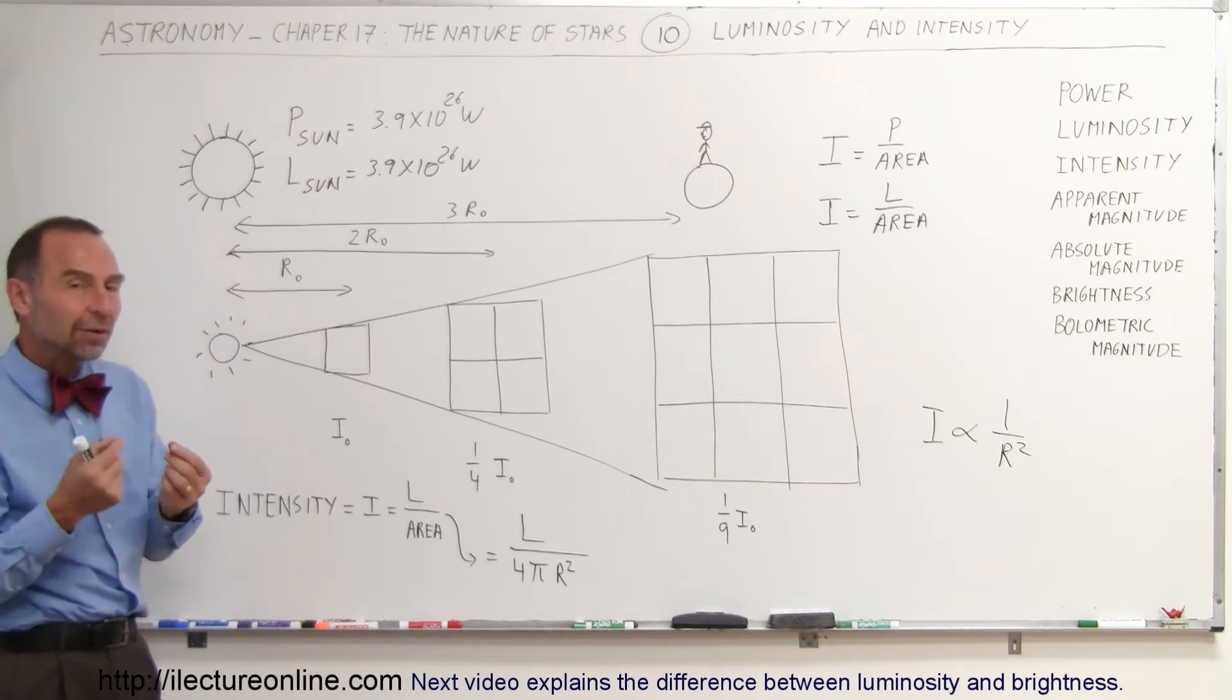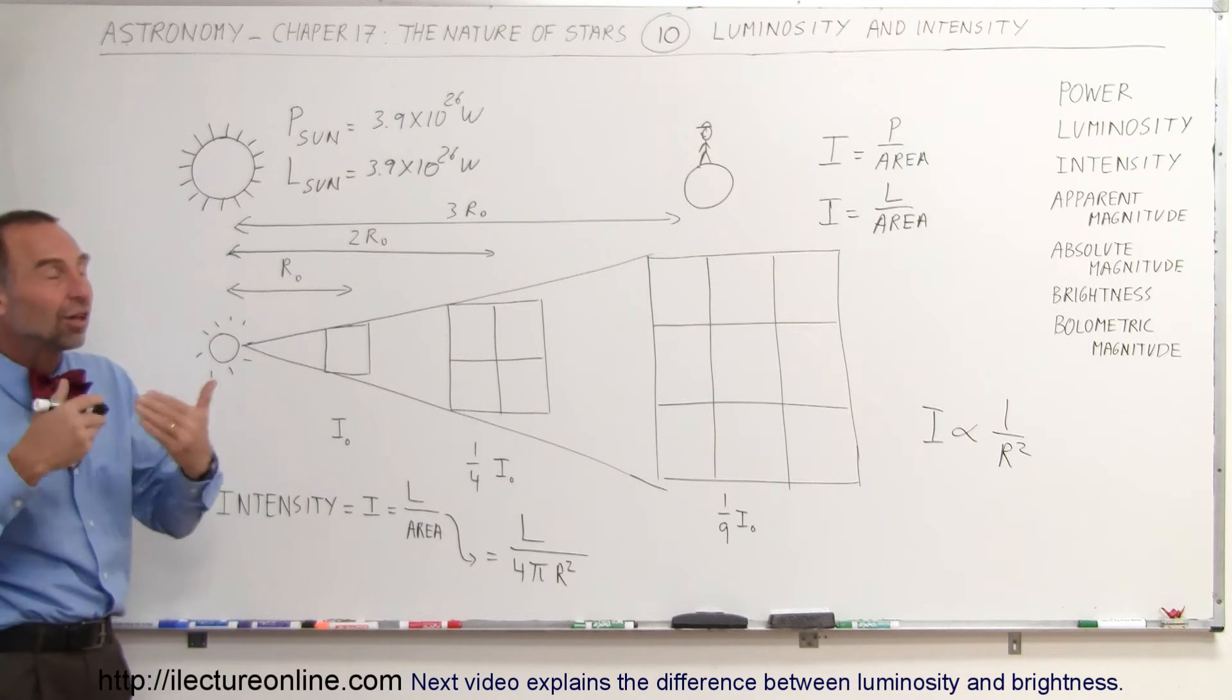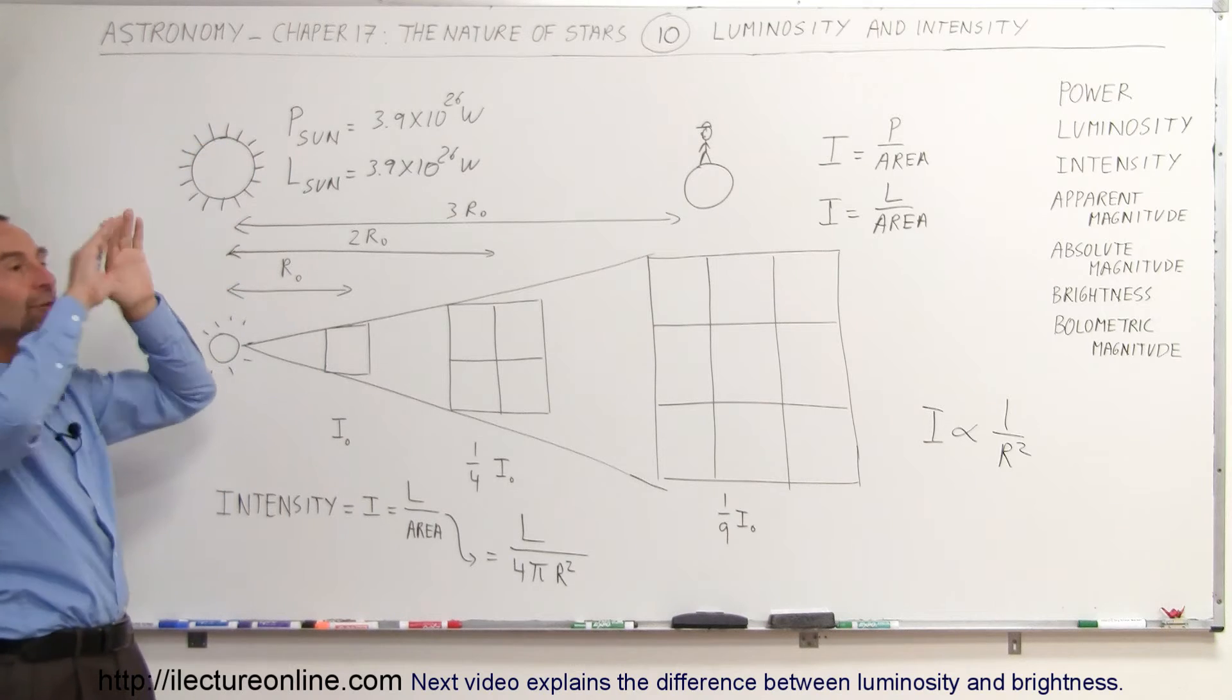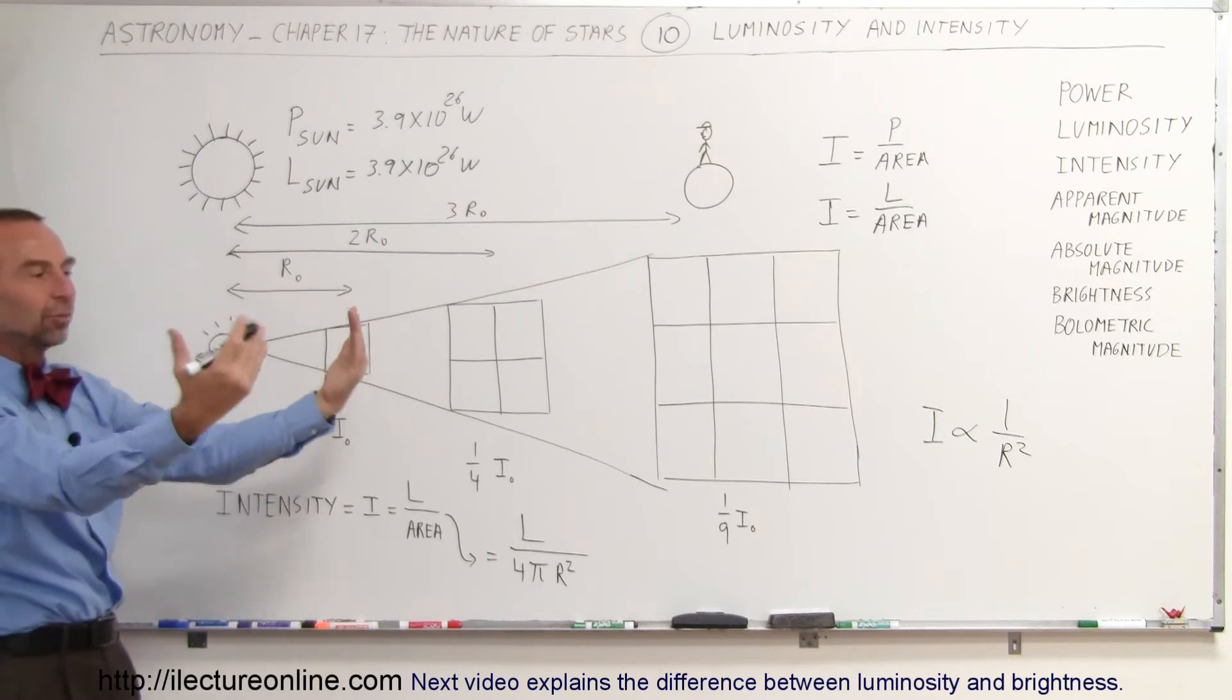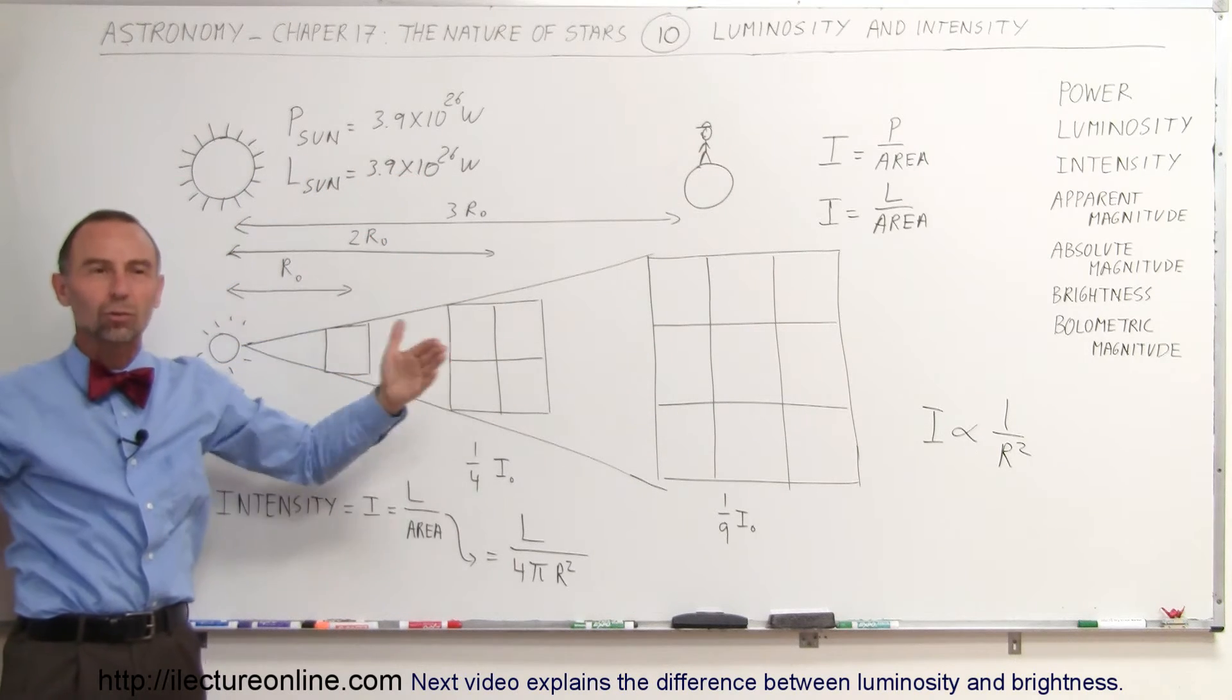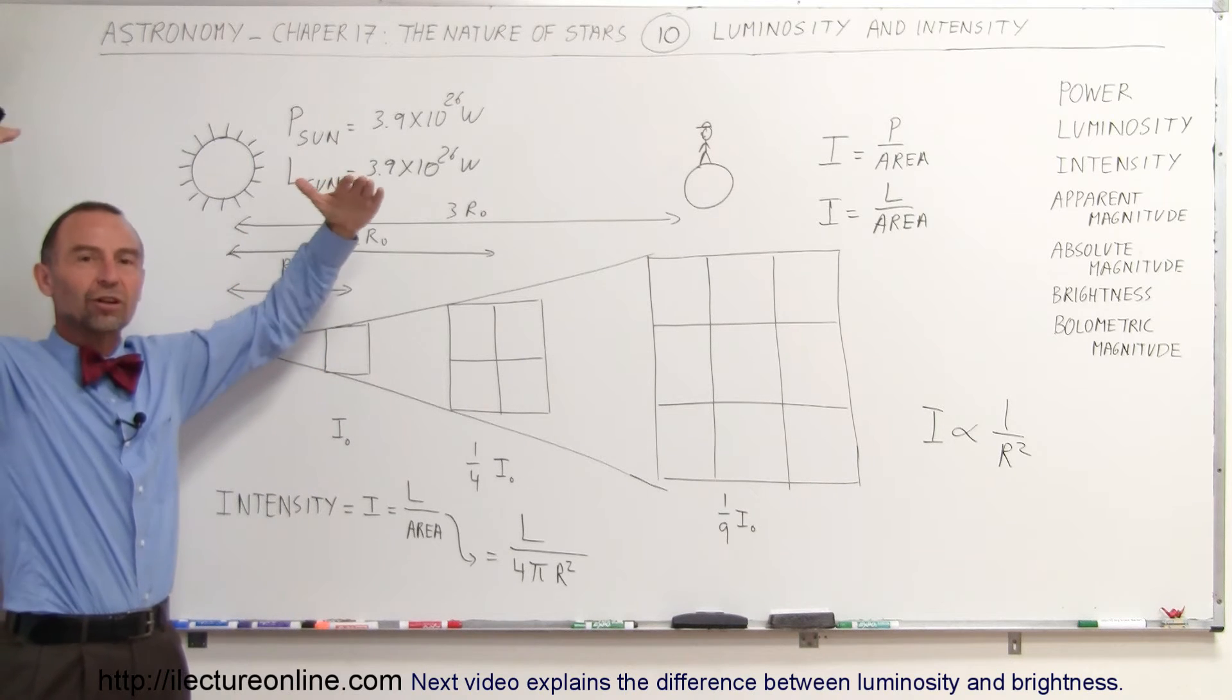So, the way to then figure out what the intensity is of the light that you receive, or I should say the energy that you receive, you take the total luminosity of the object and divide it over the area over which it spreads. And, of course, the area over which the light spread is basically a sphere, you know, because it goes out in all directions, radially in all directions. So, the light spreads out in larger and larger spherical shape.